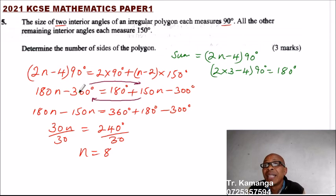So n equals 8, and that is - we have said number of sides equals the number of angles, so this means n will also represent 8 sides. So that's how you work out that.